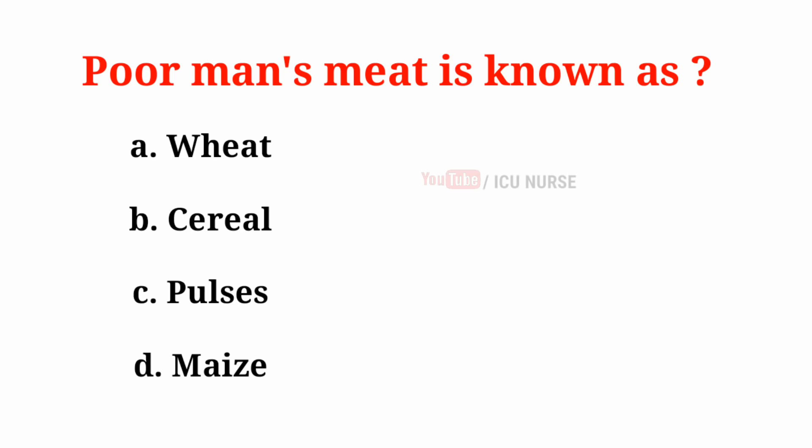Poor man's meat is known as: A. Wheat, B. Cereal, C. Pulses, D. Maize. And the correct answer is C. Pulses.